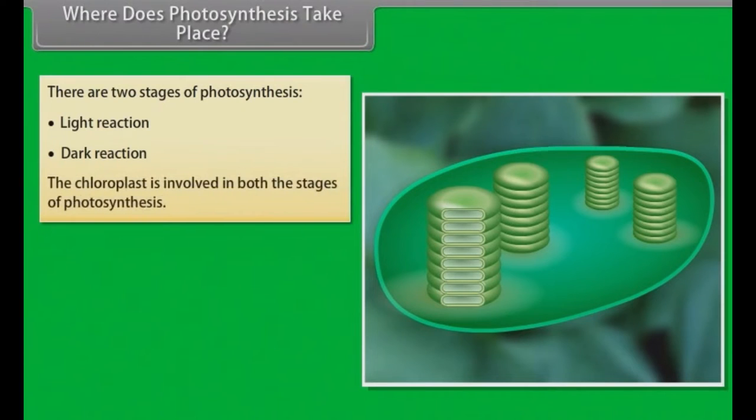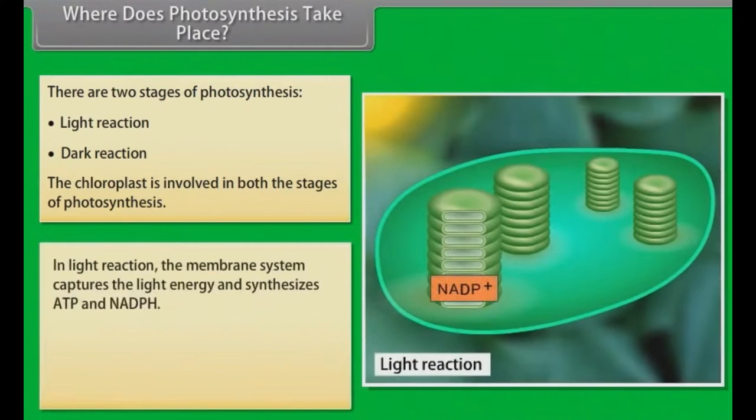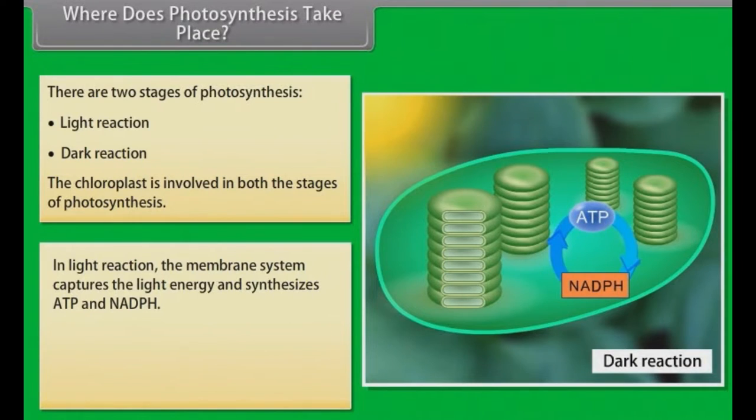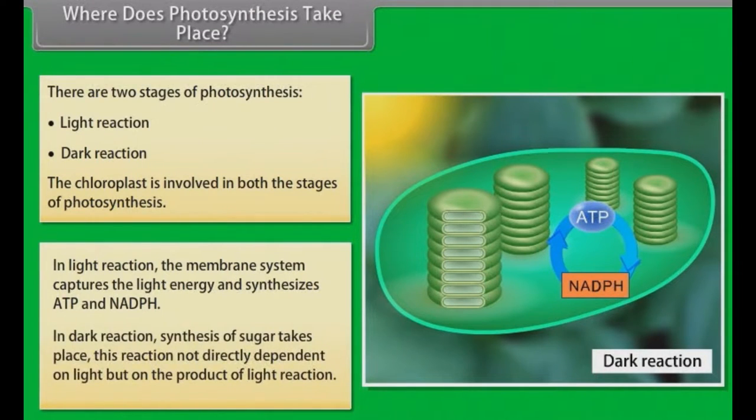The chloroplast is involved in both stages of photosynthesis. In light reaction, the membrane system captures the light energy and synthesizes ATP and NADPH. Whereas in dark reaction, synthesis of sugar takes place. This reaction is not directly dependent on light but on the product of light reaction.